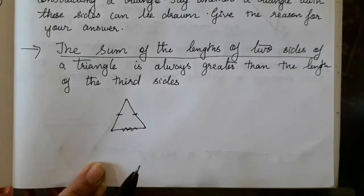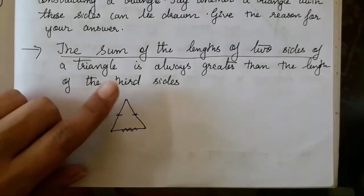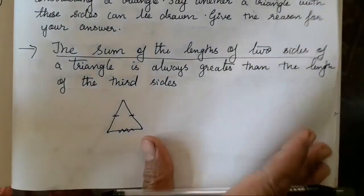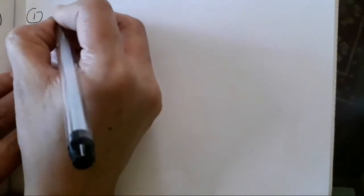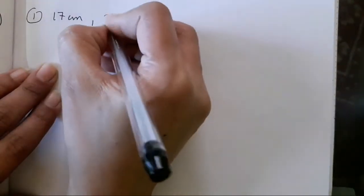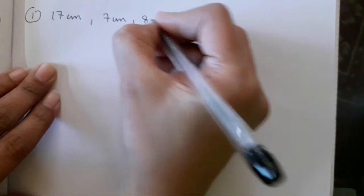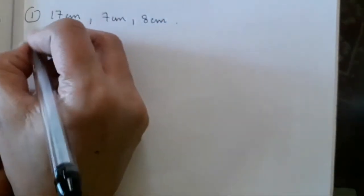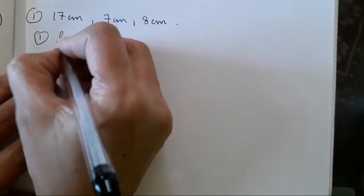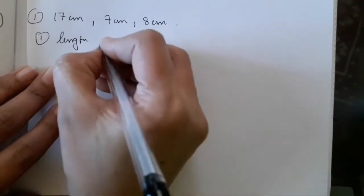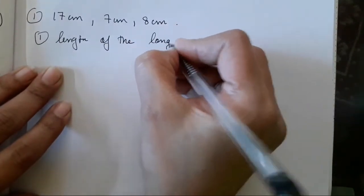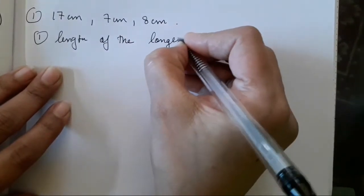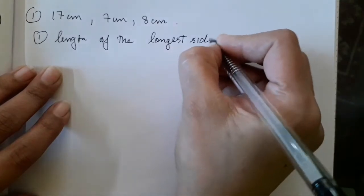Now we will see how the question is solved using this property. The first question has sides 17 cm, 7 cm, and 8 cm. First, find the length of the longest side.